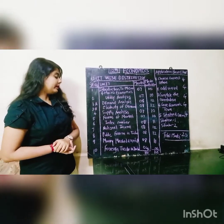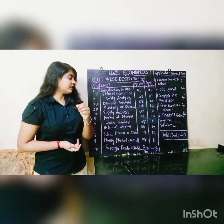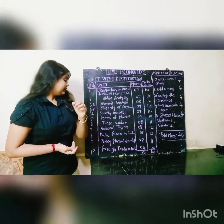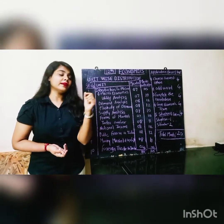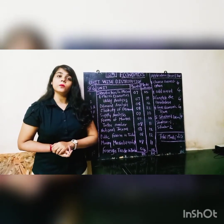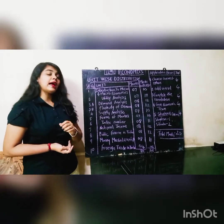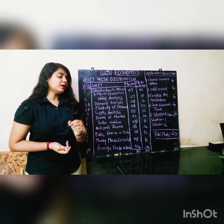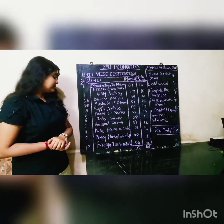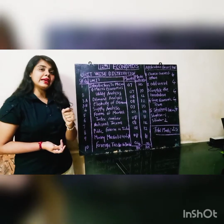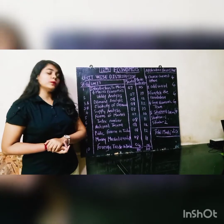Chapter number seven — National Income — carries eight marks compulsory and twelve marks with options. Chapter number eight — Public Finance in India — has compulsory eight marks and twelve marks with options. Chapter number nine — Money Market and Capital Market — is for eight marks compulsory and eleven marks with options. Chapter number ten — Foreign Trade in India — carries four marks compulsory and six marks with options.